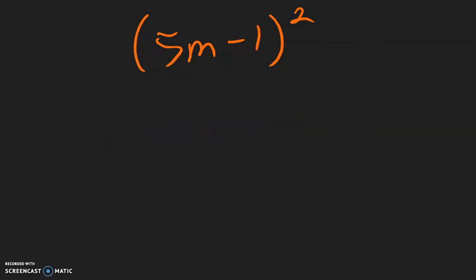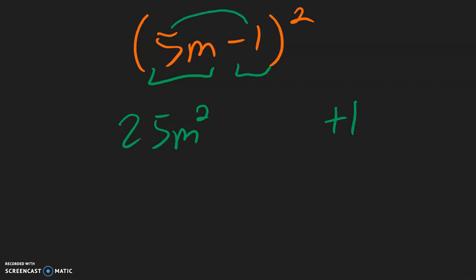For this example, multiply the front by itself: 5m times 5m is 25m squared. Multiplying the back by itself: negative 1 times negative 1 is positive 1. Now multiply the front and the back: 5m times negative 1 is negative 5m. Take that and multiply it by 2 and put it into the middle: negative 5 times 2 is negative 10m.